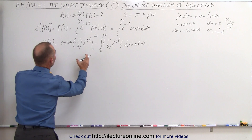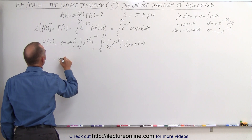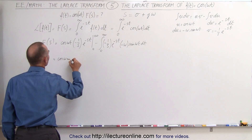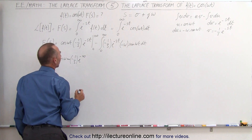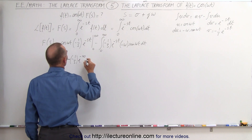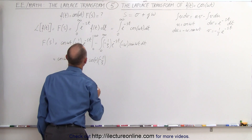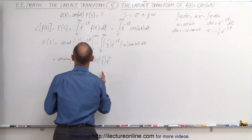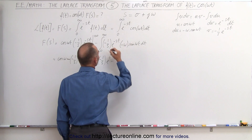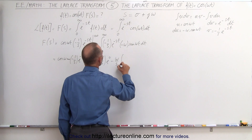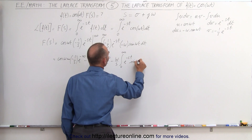Simplifying the first part: plug in the upper limit and then the lower limit. We get cos(ω·∞) times −(1/s)·e^(−∞), minus cos(0) times −(1/s)·e^0. That's the first part evaluated, and then taking the minus signs into account and pulling ω and s out, we get (ω/s) times the integral from 0 to infinity of e^(−st)·sin(ωt) dt.